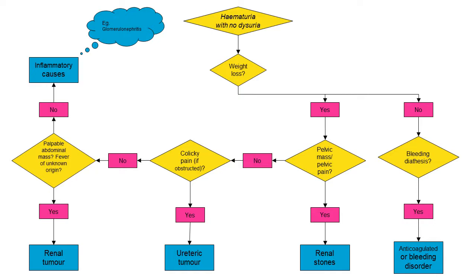Following the same flow diagram on a separate slide: a patient with haematuria and no dysuria — have they had any weight loss? If no, we look at whether they are anticoagulated or have a congenital bleeding disorder. If yes to weight loss, do they have a pelvic mass or pelvic pain? If yes, we might look at a diagnosis of renal stones. If no, is there colicky pain and are they obstructed? We can look at a ureteric tumour in these patients. If no, do they have a palpable abdominal mass or a fever of unknown origin? If yes, we might look at a renal tumour. If no, we might look at inflammatory causes such as glomerulonephritis.